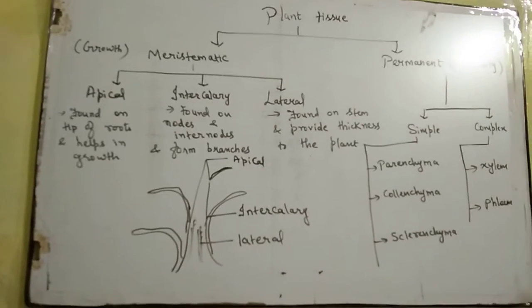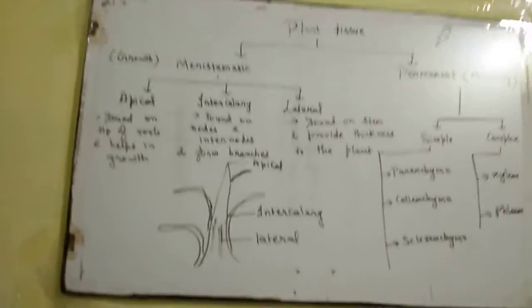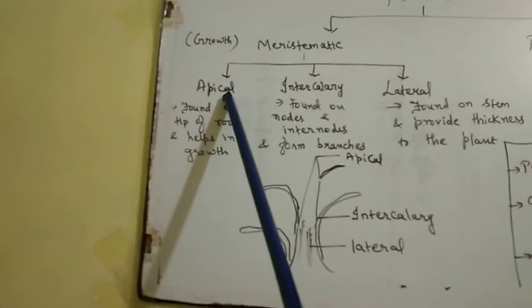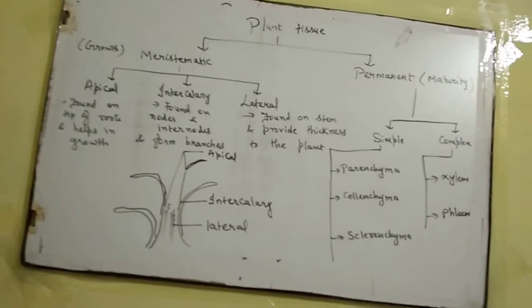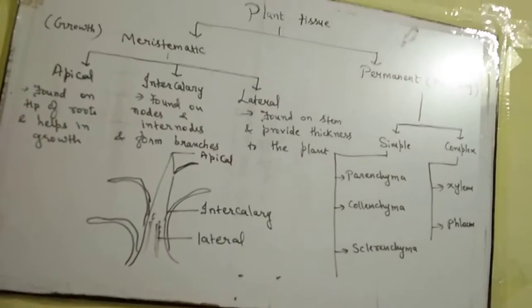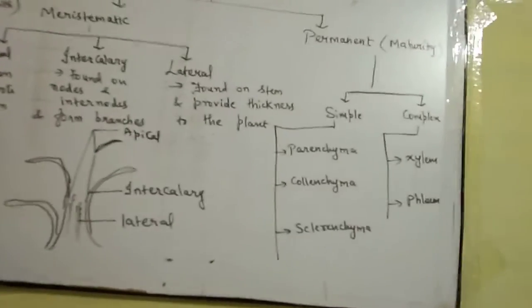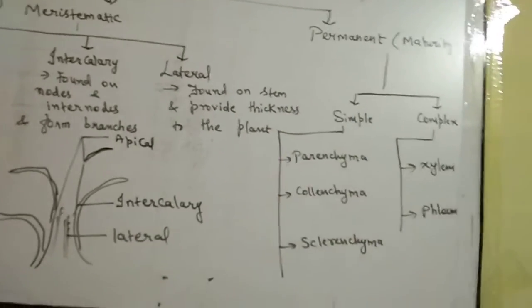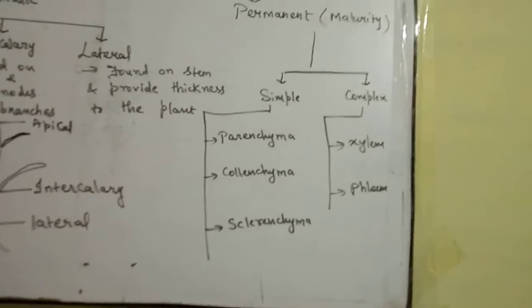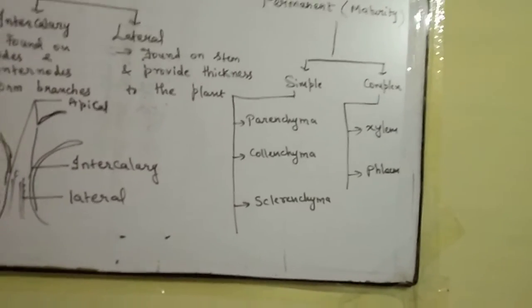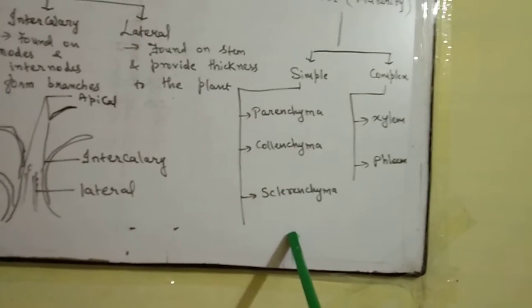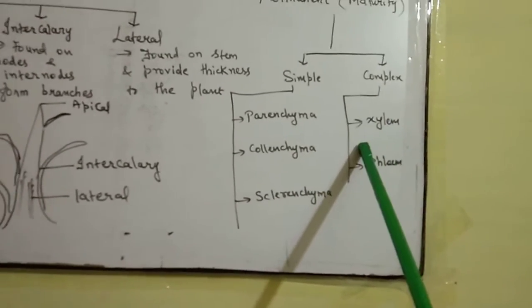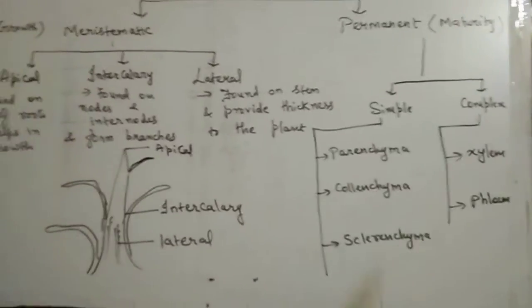So the three types of meristematic tissue are apical, intercalary, and lateral. When meristematic cells stop dividing, they are converted into permanent tissue. Permanent tissue is classified into two types: simple and complex. Simple tissue is further classified into three types: parenchyma, colenchyma, and sclerenchyma. Complex tissue is of two types: xylem and phloem.